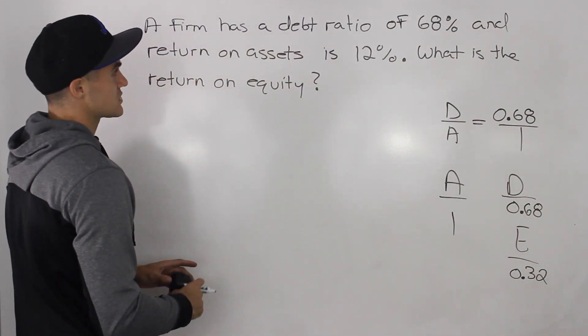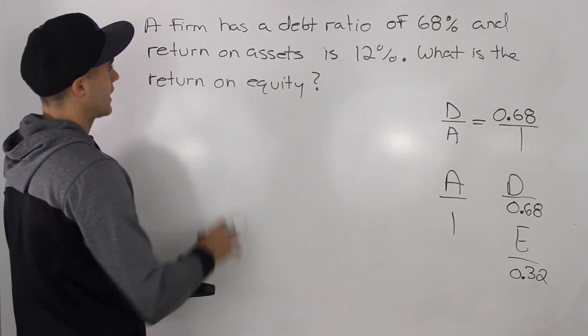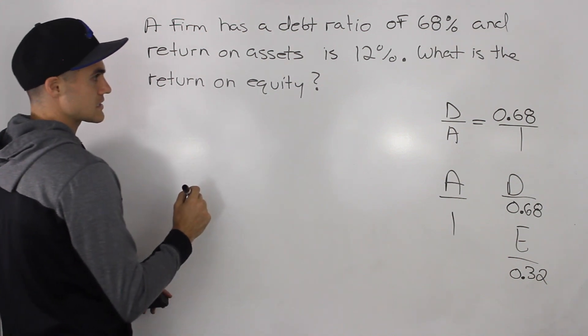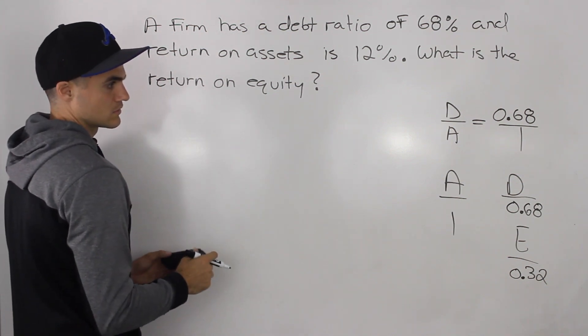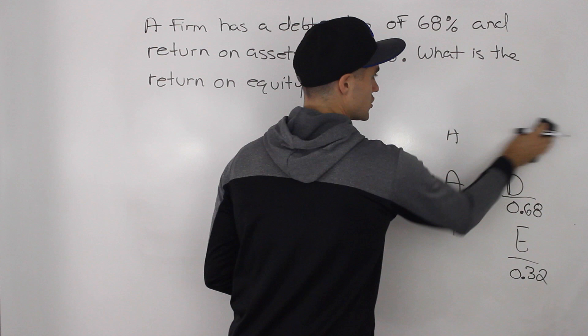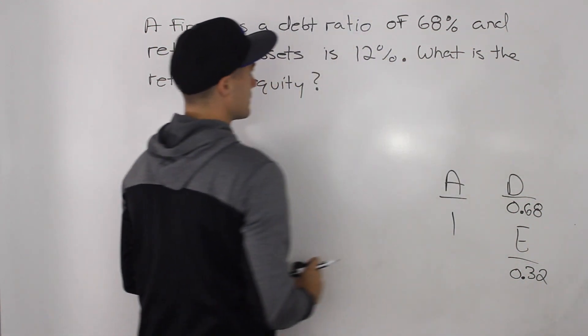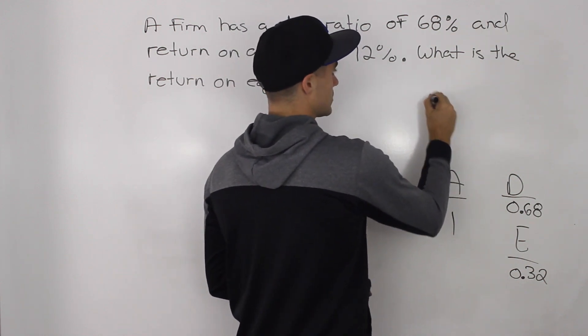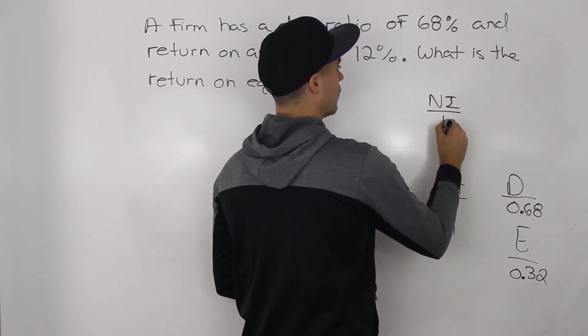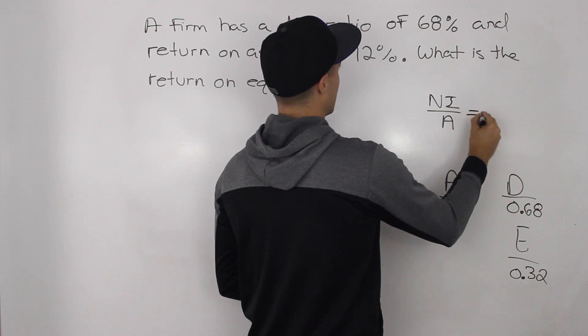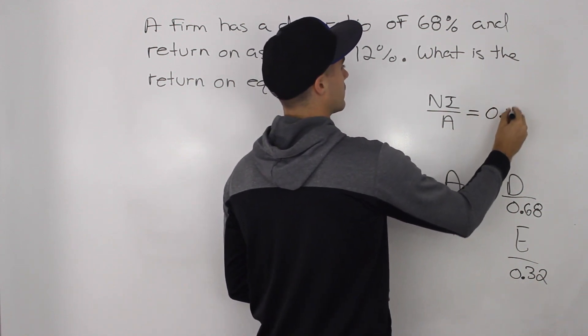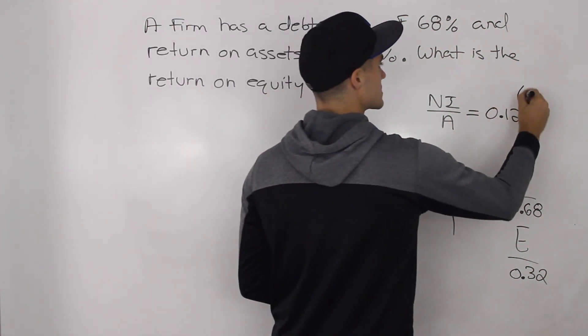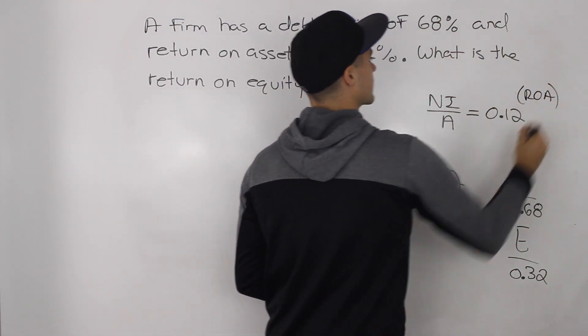And now let's get into solving the question. Actually, you know what, before we get into solving the question, this return on assets, let's write down that information over here. We already have the mini balance sheet, so we don't need the debt ratio anymore. So return on assets, we know that's equal to net income over assets. And that is equal to 0.12 in decimals. So this is the return on assets as reference.